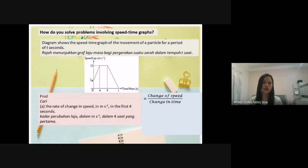So here, final speed 12 minus initial speed 4, over 4 minus 0. We can also use gradient to find the answer. The answer is 2 meters per second squared.